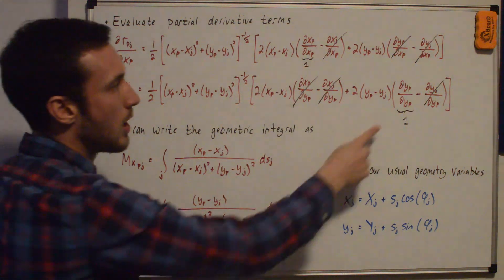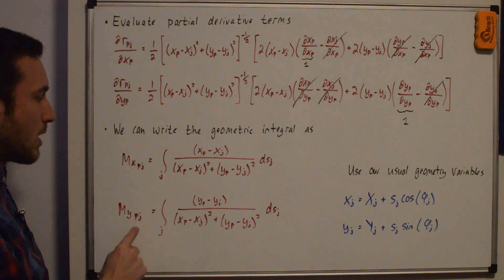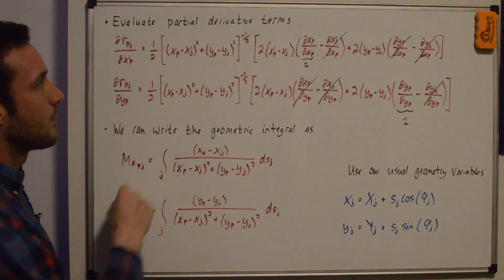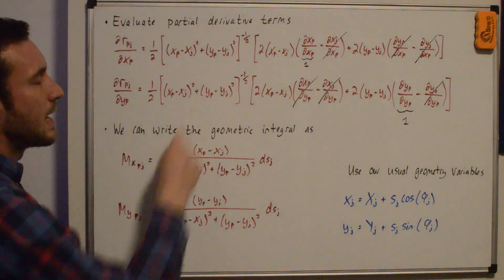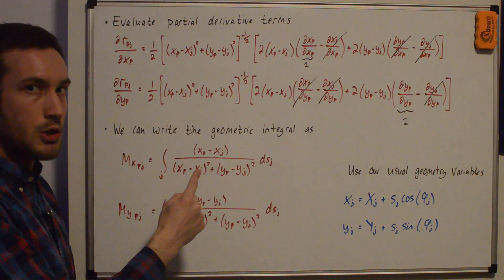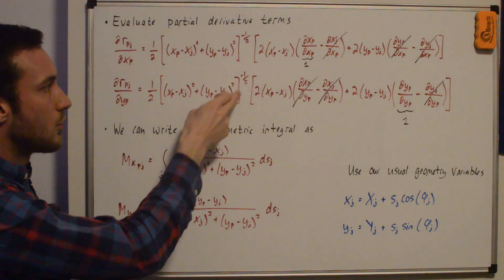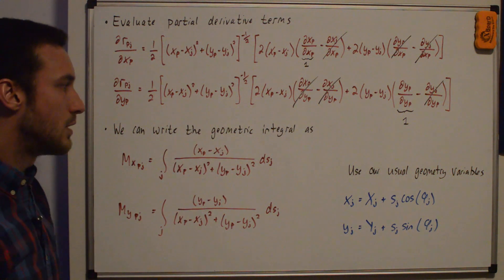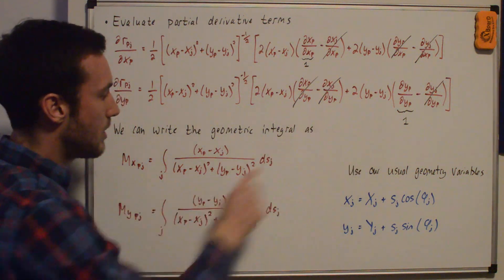We can now write the full geometric integrals MXPJ and MYPJ. The factors of two and one-half cancel throughout. The RPJ squared term is brought to the denominator because of the negative one-half power. There is no square root remaining because the full geometric integral term is 1/RPJ times the partial derivative terms — when two identical square root terms multiply together they yield just the term inside the square root, as detailed in my IIJ video. The numerators are simply XP minus XJ and YP minus YJ.